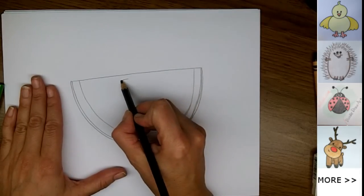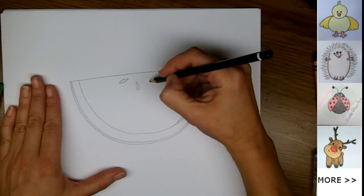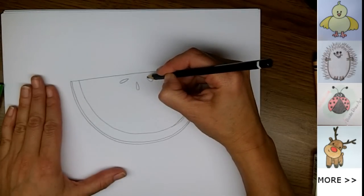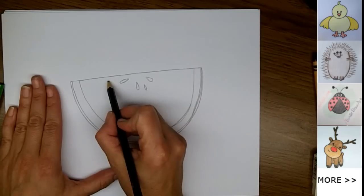Then we're going to draw the seeds for our watermelon. Watermelon seeds are teardrop shaped. So we're just going to draw these teardrop shapes, pointing in towards the center of our watermelon.